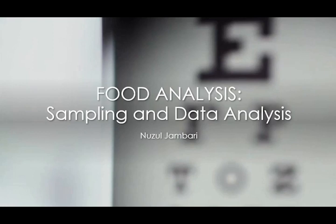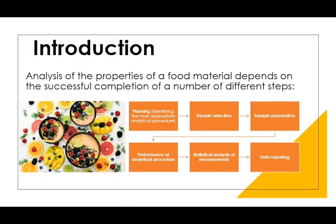We're going to look at an overview of how you can perform sampling in different situations and basic data analysis in food analysis. In analyzing properties of food materials, for it to be successful, it depends on different steps. The step that people tend to overlook is actually the most important — the planning. This is where you look at your sample plan, which depends on the objective or purpose of your analysis. From here, you can also identify the most appropriate analytical procedures depending on your food matrix and objective.